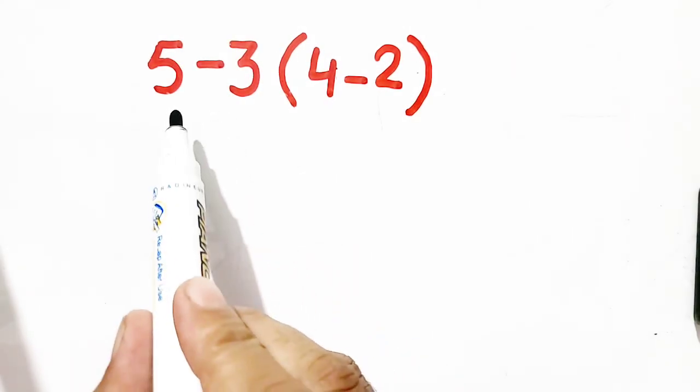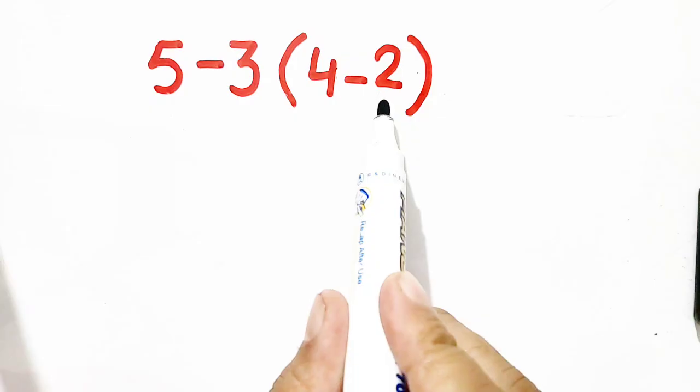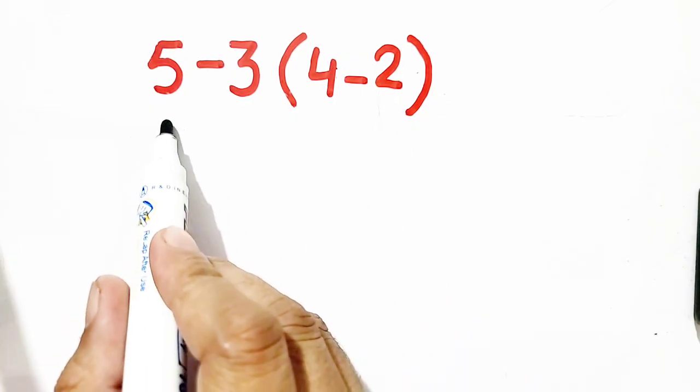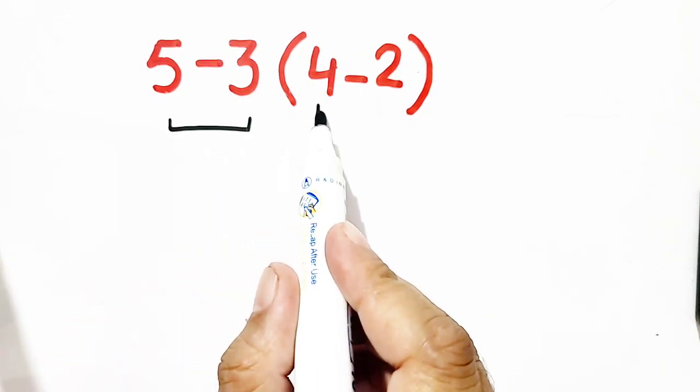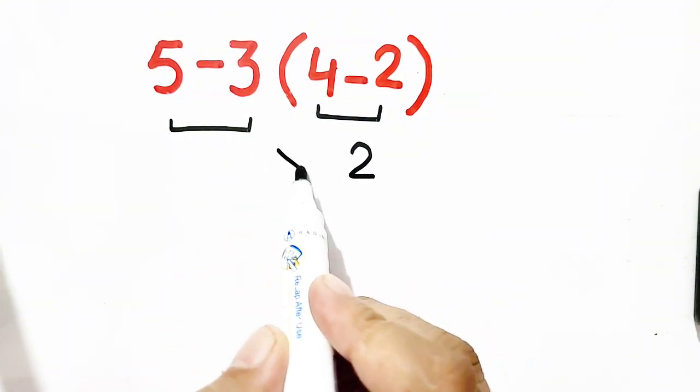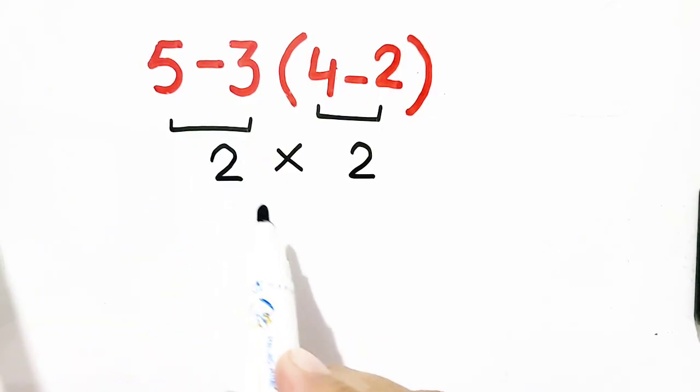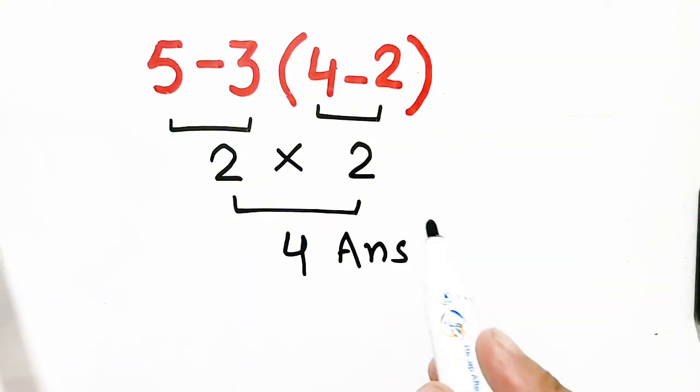Hello respectable audience. My question is 5 minus 3(4 minus 2). First of all, parentheses should be solved. It is 2. Here is no sign, so it is multiplication. 5 minus 3 is equal to 2, so 2 times 2 is 4. Four will be our answer, but remember that it is not correct.